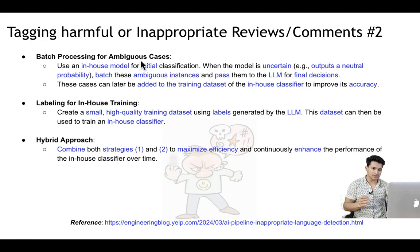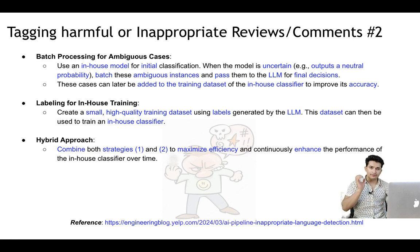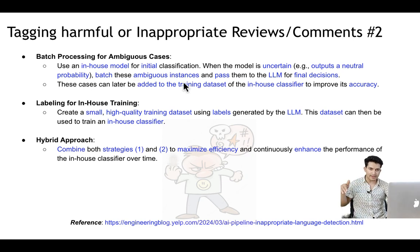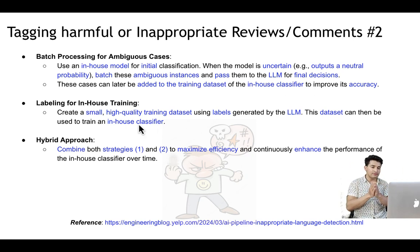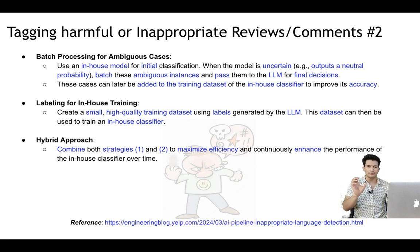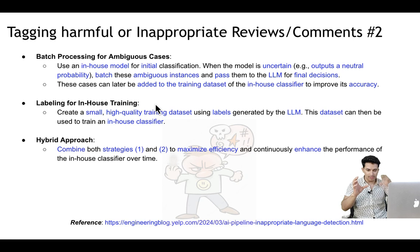The first approach is batch processing for ambiguous cases. You can have an in-house classifier that classifies reviews as harmful or not harmful. Wherever the classifier is confused — probabilities around 0.5, like 0.48 or 0.56 — those cases are passed in batches to an LLM for tagging. Once tagged, they are added back to the training data so the in-house classifier improves accuracy in the next training phase. Alternatively, you start with a small high-quality training dataset with labels generated by an LLM to train the in-house classifier. Or you use a hybrid approach — a continuous feedback loop — combining all these methods.